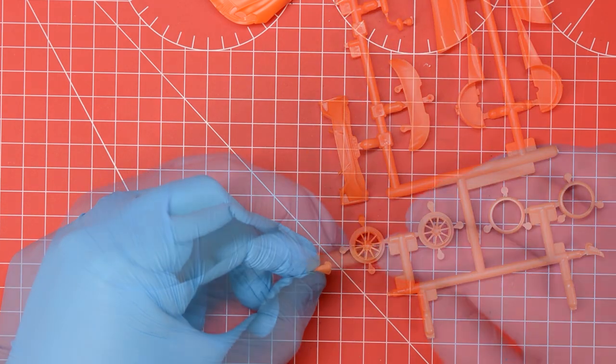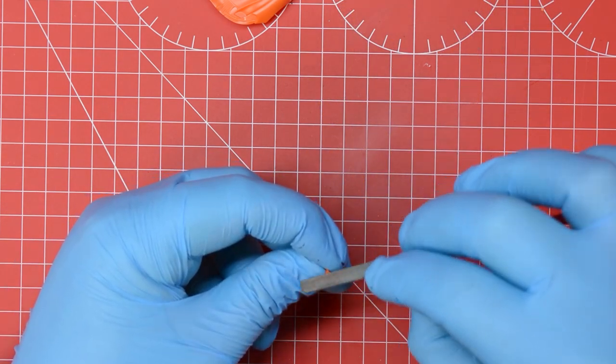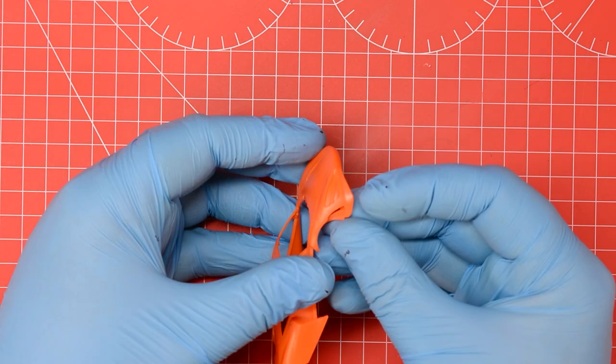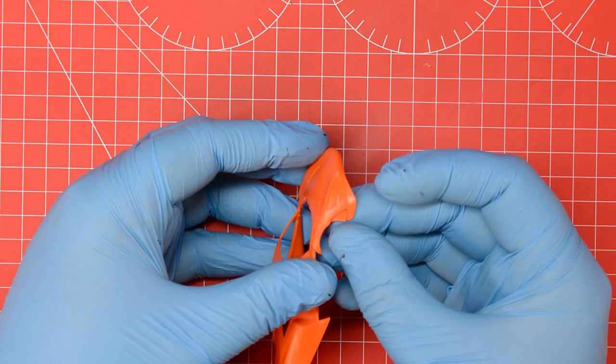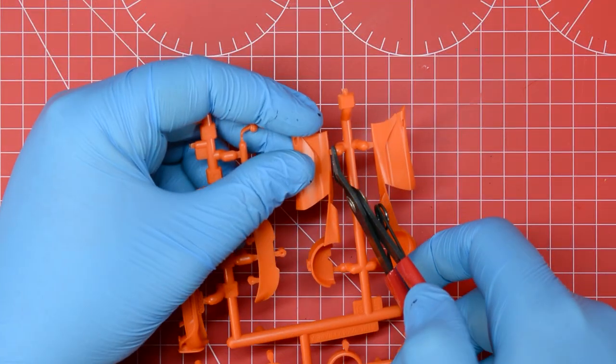Moving on to the exterior of the model, there are some small inserts for the front wheel arches which we removed from the frame, cleaned up and glued into position using the techniques that we've already showed so far.